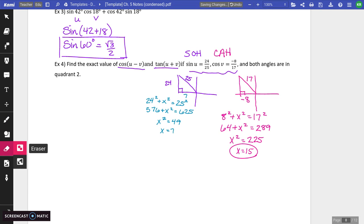And x squared is going to equal 225. Square root of 225 is 15. So that's kind of nice. So, okay, so this side is going to be 15. Okay, so this is angle V. And this is angle U.